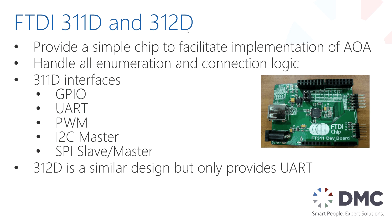The FTDI 311 and 312 chips are pre-programmed with this functionality and protocol built into them, so you don't have to handle the low-level logic of enumerating and talking to an Android device. They provide a variety of interfaces for your hardware: general IO, UART, PWM, I2C, or SPI. The 312 chip is essentially the same as the 311 except it only provides a UART output.